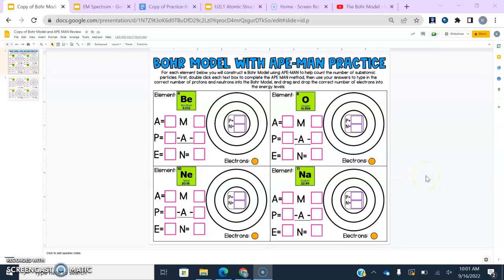All right guys, so today I'm going to show you an example of drawing a Bohr model. Thankfully we're going to do it with the help of technology, so we're going to do it on these Google Slides. I'm going to do the first two examples with you and then you guys will do the rest on your own. So this is number one, a review of Ape Man and also how to draw your Bohr models. The first thing we need to do before we draw a Bohr model is determine our protons, our neutrons, and our electrons so we know how many of those electrons to fill in those energy rings.